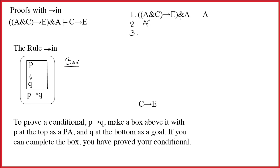Ampersands are easy. A ampersand C arrow E. Line 2, A. Justification for both of those is 1 ampersand out, and we use the diddle marks. Okay, I can check off line 1.